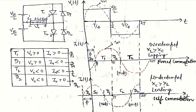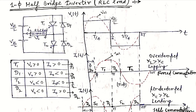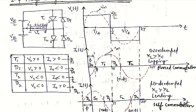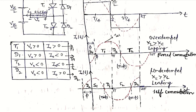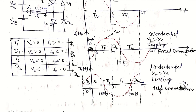In summary, self-commutation is possible in the leading load case, while in the lagging load case self-commutation is not possible — forced commutation is required. This is a very important point from the exam perspective. So we see both self and forced commutation in this half-bridge topology.